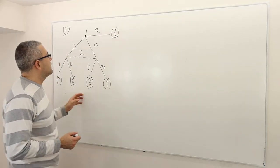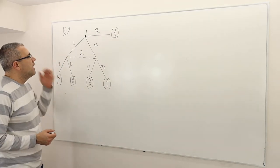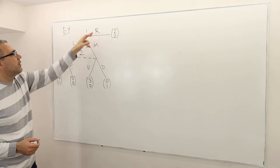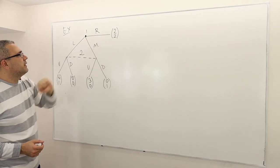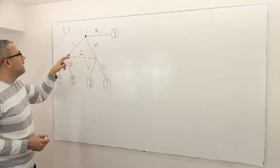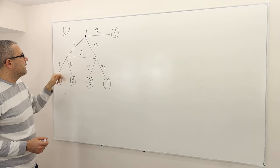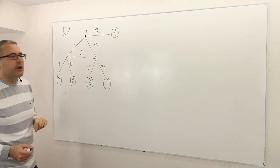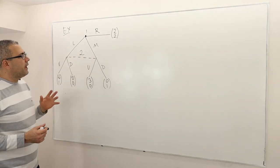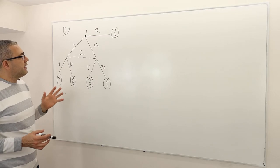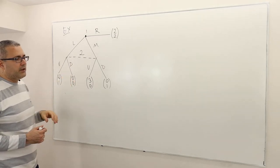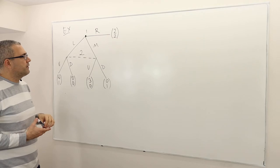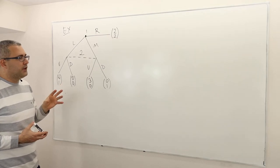Now let's look at this example. Player one has three actions: left, middle, right. If he chooses right, the game is over. If he chooses left or M, then player two moves up or down, and these are the payoffs. You can write down the normal form representation or the strategic form of this game, and find the Nash equilibrium.